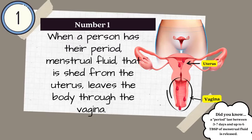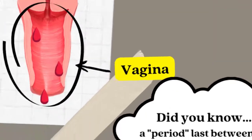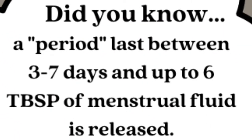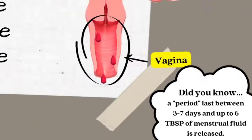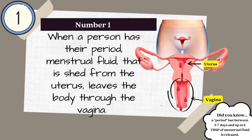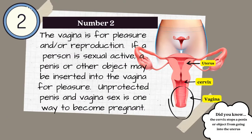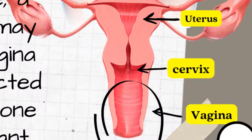Number one: when a person has their period, menstrual fluid that is shed from the uterus leaves the body through the vagina. Did you know a period lasts between three to seven days, and up to six tablespoons of menstrual fluid is released?